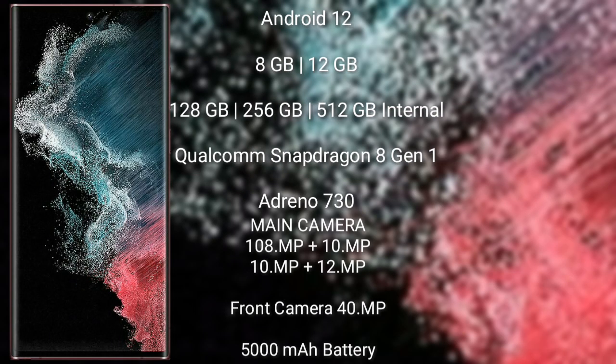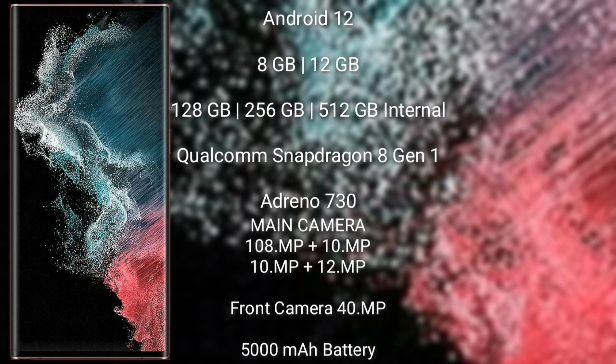The Samsung Galaxy S22 Ultra runs on Android 12. It comes with 8GB or 12GB RAM and 128GB, 256GB, or 512GB internal storage, powered by a Qualcomm Snapdragon 8 Gen 1 processor.